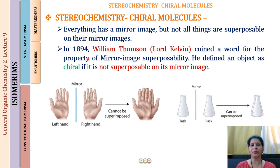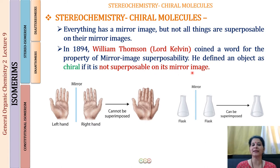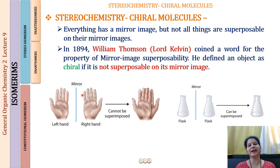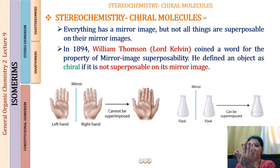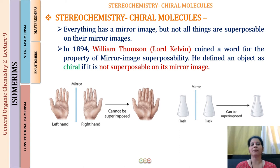In 1894, William Thompson — commonly known as Lord Kelvin — coined a word for the property of mirror image superposability. He defined an object as chiral if it is not superposable on its mirror image. So my left hand is not superposable on my right hand, which is its mirror image — therefore the left hand is chiral and the right hand is also chiral.